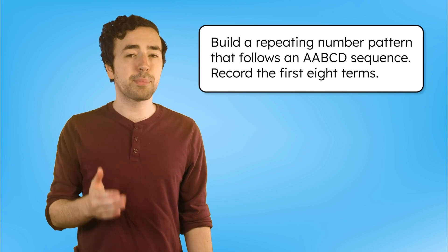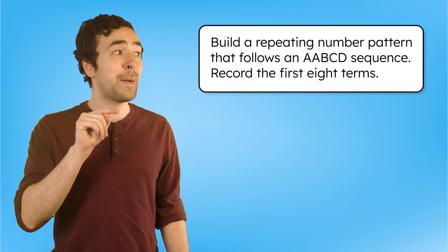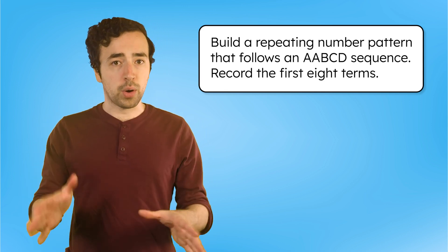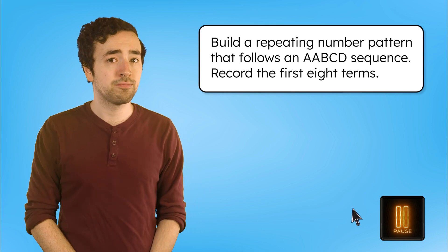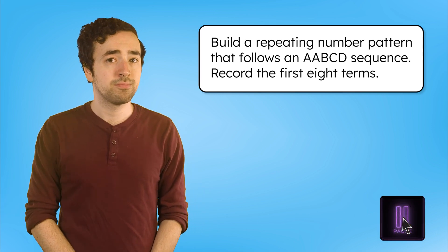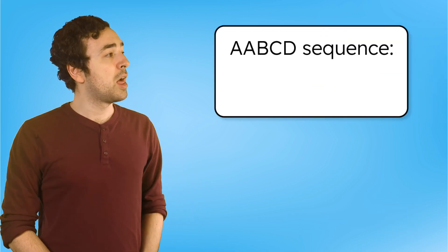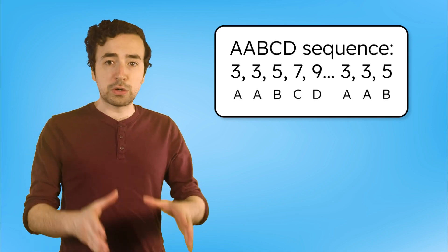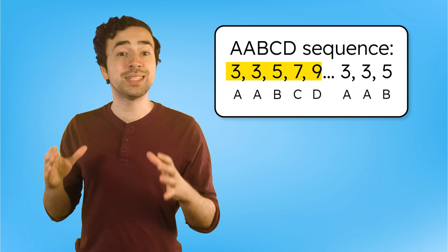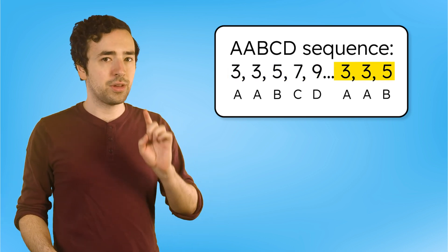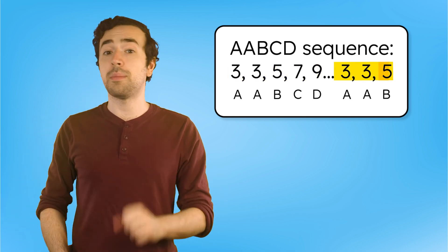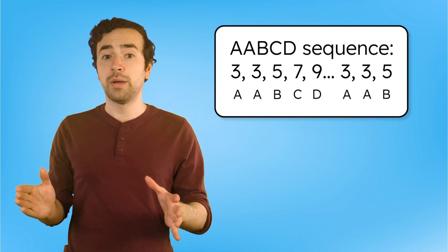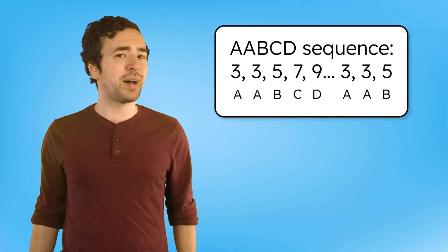Try building your own repeating number pattern that follows an AABCD sequence, and record the first eight terms for your pattern. Pause here to build the pattern in your guided notes. Here's what I did: 3, 3, 5, 7, 9, 3, 3, 5. The first five terms are that full AABCD sequence. Then it starts over, and the eighth term is five again. If your eighth term matches your third term in your sequence, that means your pattern is repeating in the right order. The order is what matters, even if your numbers are different from mine. Nice job spotting the structure.